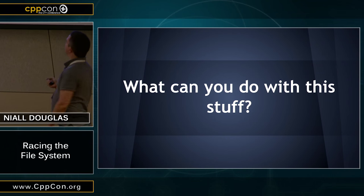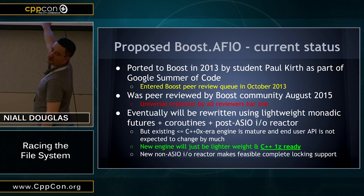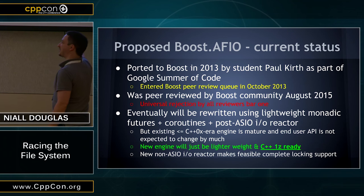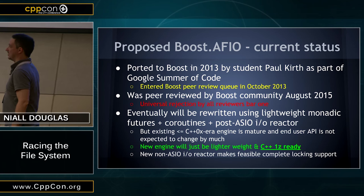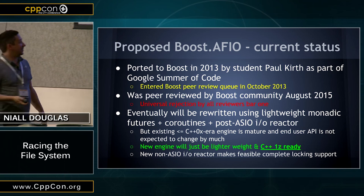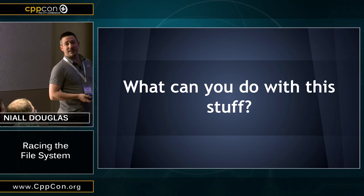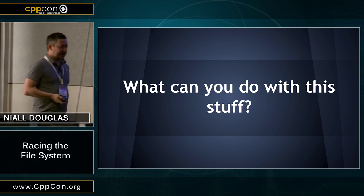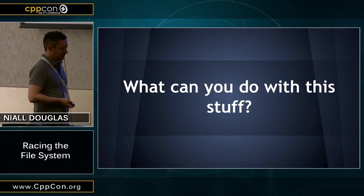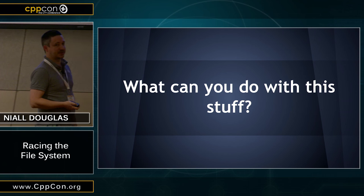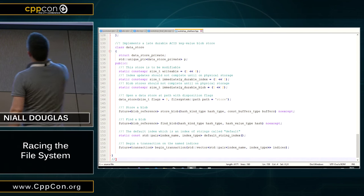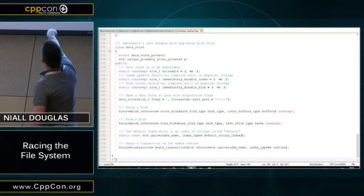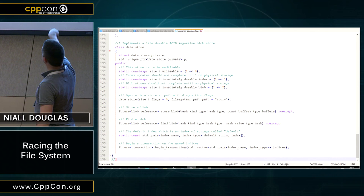The biggest missing feature is asynchronous file locks with portable locking, which requires rewriting ASIO's core reactor — currently built around socket and networking IO. This is blocked on C++17 coroutines being available in Clang and Visual Studio. I've written a lightweight monadic futures library as the first component, much faster than standard futures and integrating coroutines. As for what you can do with this stuff: one application is a transactional key-value store that builds into the C++ runtime — class DataStore with store blob, find blob, and begin transaction operations.